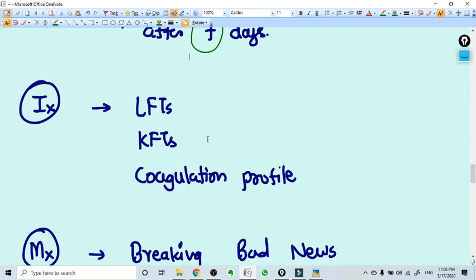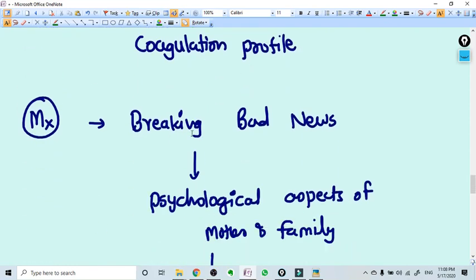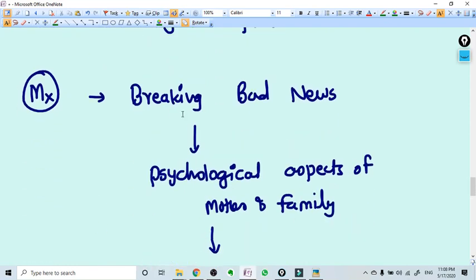Now we need to investigate. Obviously we need to get the routine investigations, but very important are LFTs, KFTs, and coagulation profile. This will decide the plan of management.